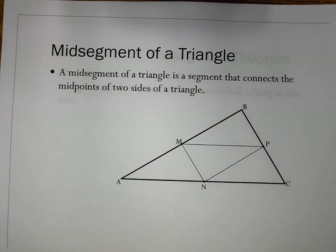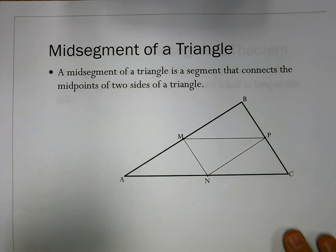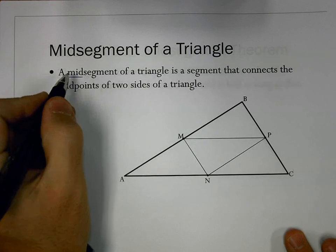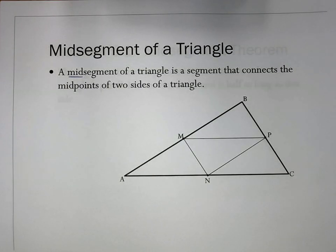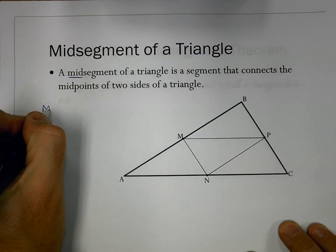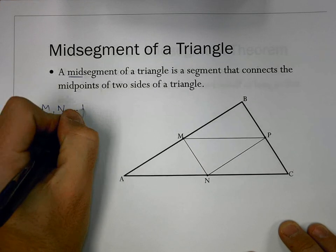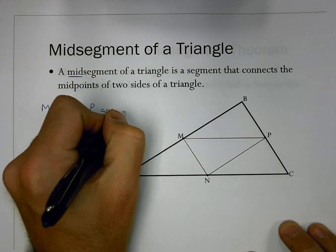If we look at the first part of this section, which is the mid-segment of a triangle — a mid-segment of a triangle is a segment that connects the two midpoints of the two sides of the triangle. It has the word 'mid' in it, so we want to think midpoint, which is in the middle. So if we start with just this diagram, we know that M, N, and P are all midpoints.